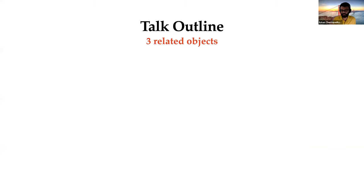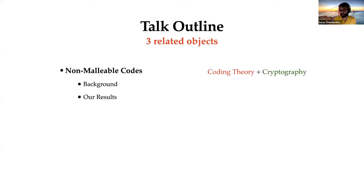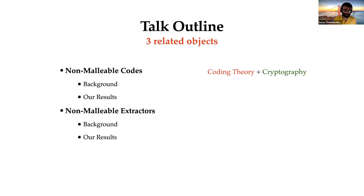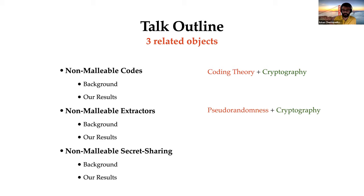The outline of the talk is the following: we'll talk about three related objects. The first is non-malleable codes, which arises in the intersection of coding theory and cryptography and has found a lot of nice applications. The second object is non-malleable extractors, arising in the intersection of randomness and cryptography. The third object is non-malleable secret sharing, a recently defined notion which has also generated a lot of work.